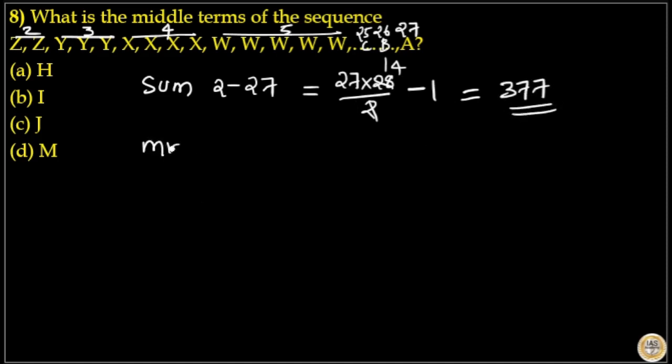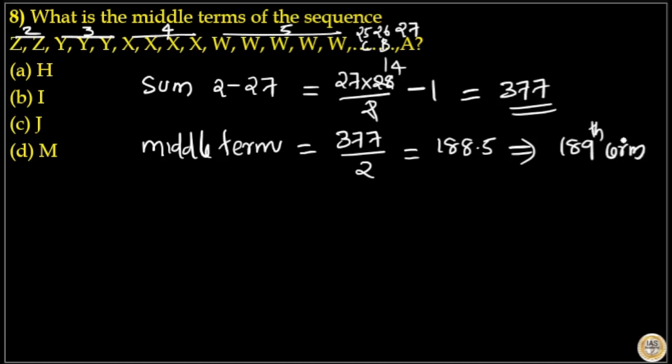That means middle term is sum divided by 2. That is 377 divided by 2. That is 188.5. That means the 189th term.